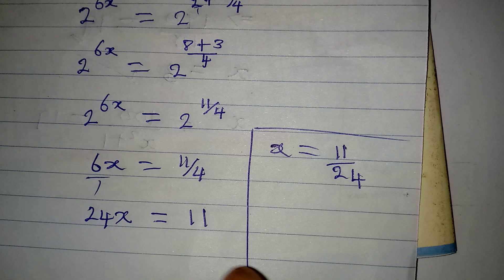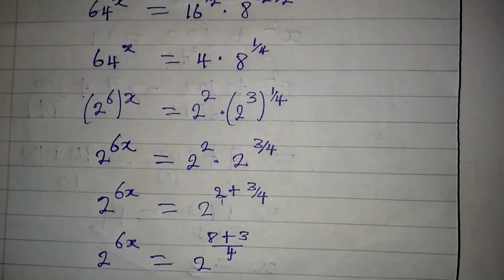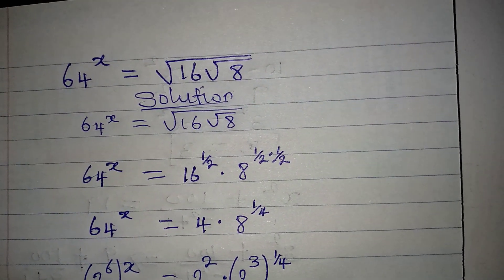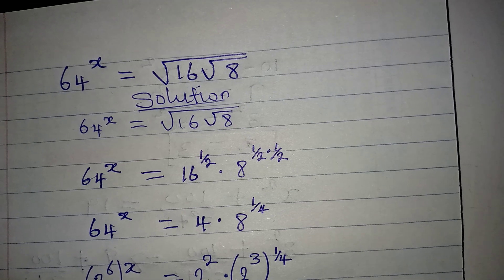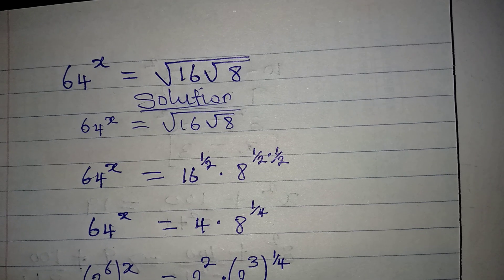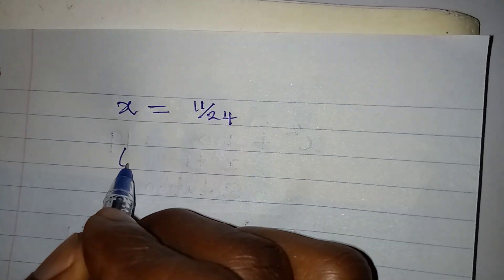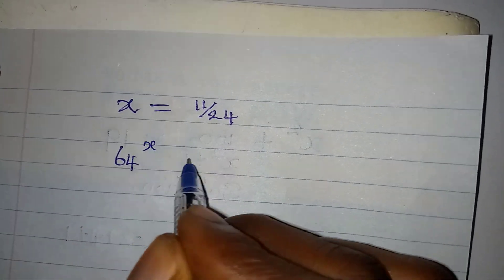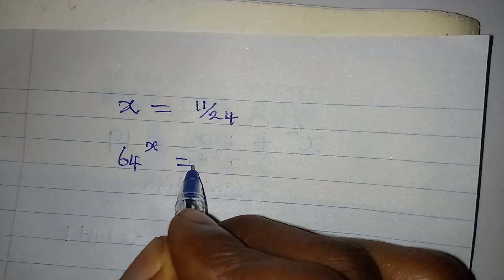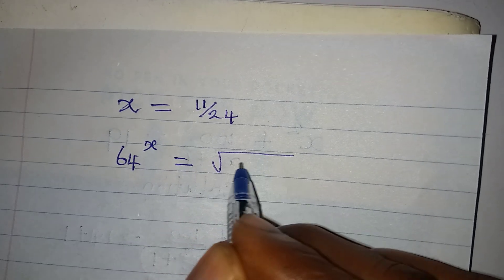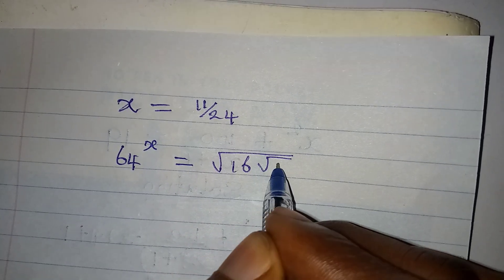Now, my concern is: if we substitute this value of x back into the problem, will we get the same value on the left and on the right? Let's check. We have x equal to 11 over 24, and the original equation is 64 to the power of x equal to the square root of 16 times the square root of 8.